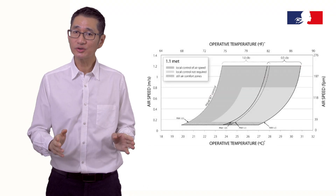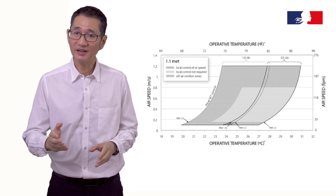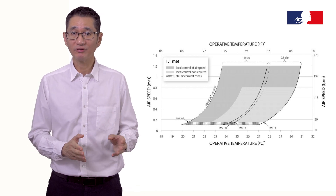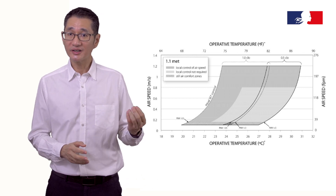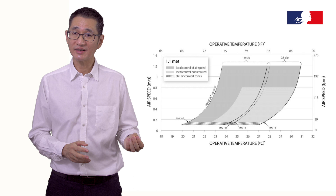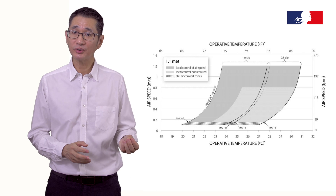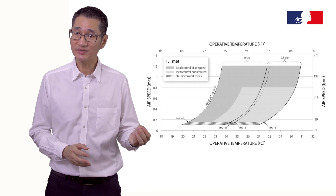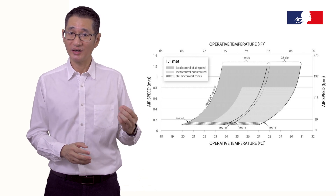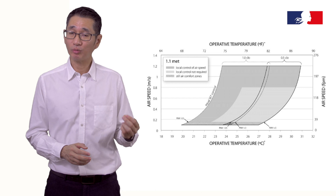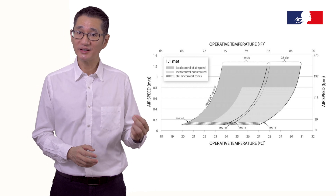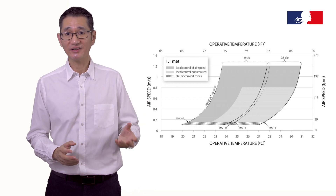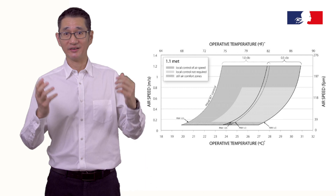The last tool to be introduced is elevated air speed for thermal comfort. This tool indicates that it is possible to feel comfortable up to 30 degrees Celsius with an air speed of 1.2 meters per second — that is, sitting underneath a ceiling fan.